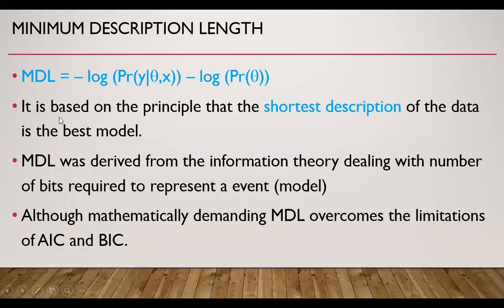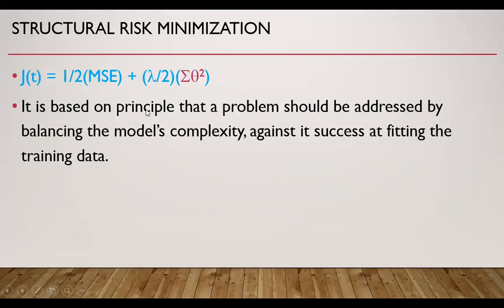Minimum description length is based on the principle that the shortest description of the data is the best model. MDL is derived from information theory dealing with the number of bits required to represent an event or a model. Although mathematically demanding, MDL overcomes the limitations of AIC and BIC. Structural risk minimization is based on the principle that a problem should be addressed by balancing the model's complexity against its success at fitting the training data, incorporating both an error term as well as a penalty for the complexity of the model.